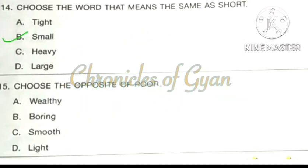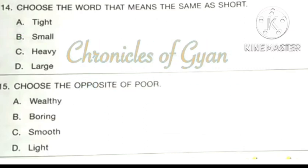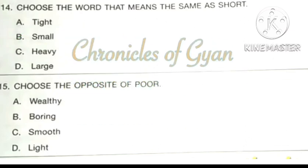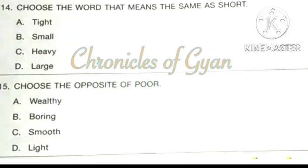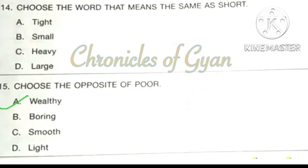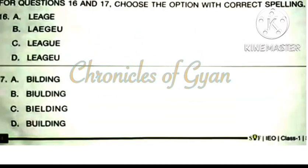Question 15: Choose the opposite of 'poor'. The opposite of poor is option A: Wealthy. Poor means Garib and Wealthy means Amir.